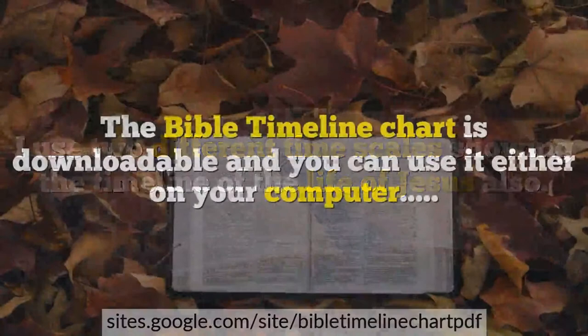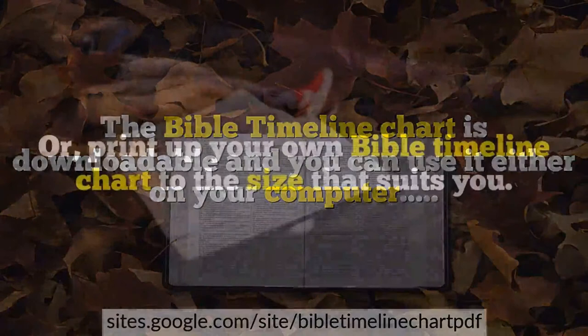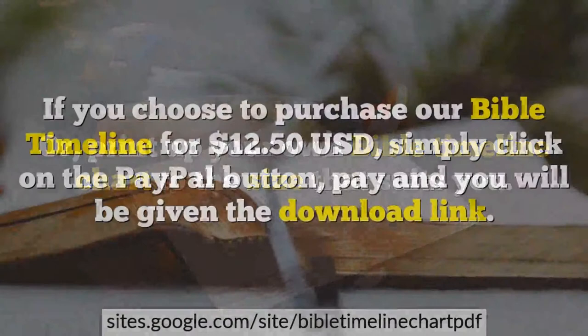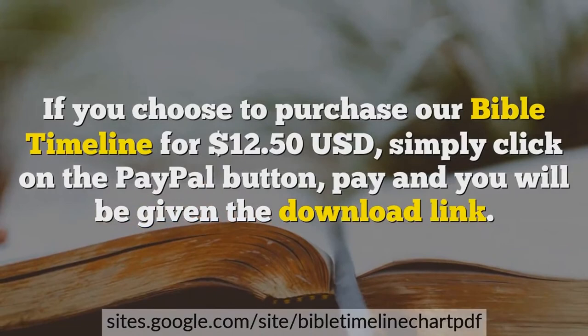The Bible Timeline Chart is downloadable and you can use it either on your computer, or print up your own Bible Timeline Chart to the size that suits you. If you choose to purchase a Bible Timeline for $12.50, simply click on the PayPal button, pay and you will be given the download link.